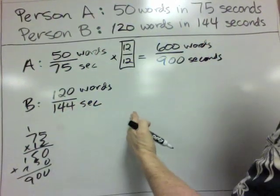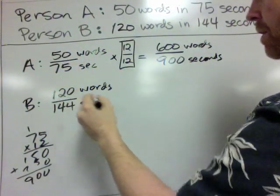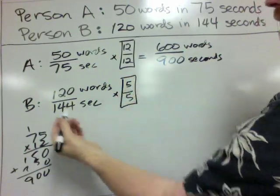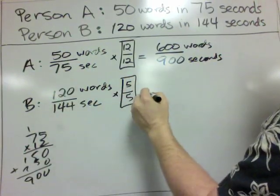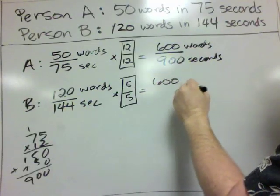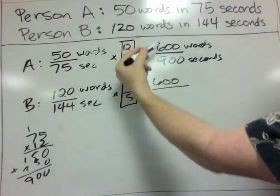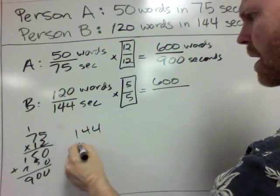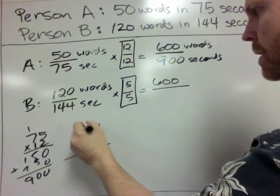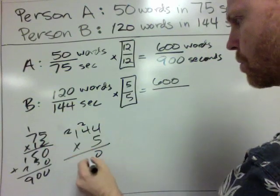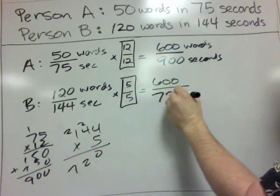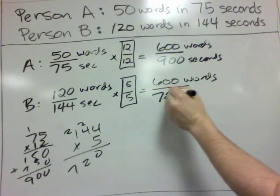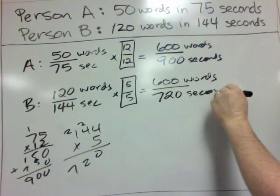And then down here, I can take 120 and multiply by 5 over 5. So 120 times 5 is equal to 600, and there's our common numerator. And then 144 times 5, I have no clue what it is. So we've got 720. So this is 600 words over 720 seconds.